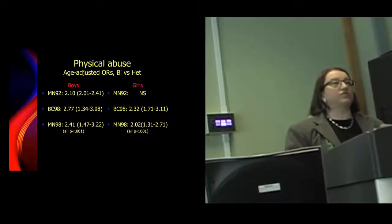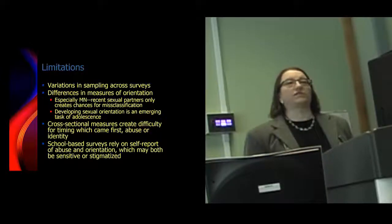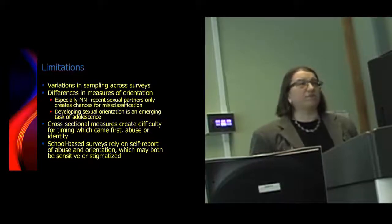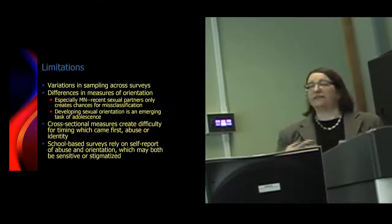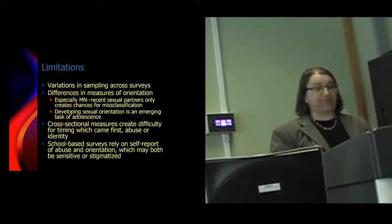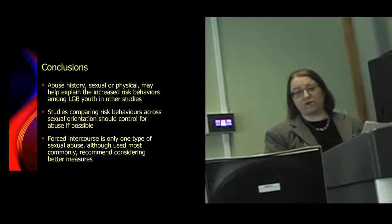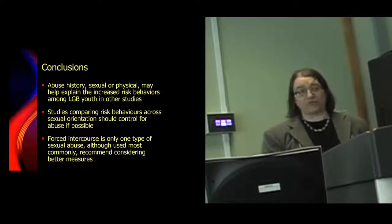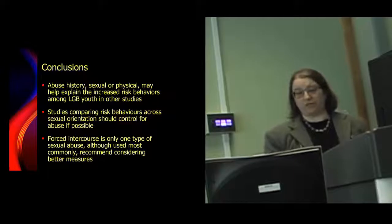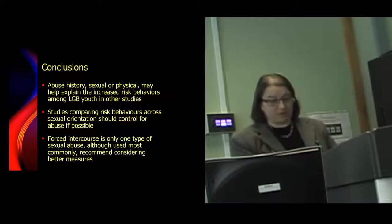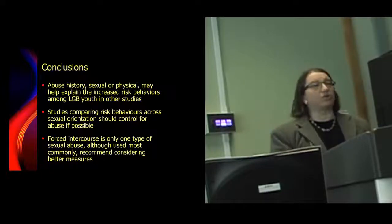The odds-adjusted ratios are also quite high. Regarding limitations: sampling differences across surveys is an important issue, and there are differences in measuring orientation across sites. These are cross-sectional surveys, so we can't determine timing, and they rely on self-report, which may be sensitive or stigmatized. In conclusion, LGB youth are at higher risk, and abuse history — sexual or physical — can help explain the increased risk behaviors we see. When comparing risk behaviors across sexual orientation, you should control for abuse if possible. Forced intercourse is only one type of sexual abuse and, though most commonly used in surveys, we recommend considering other measures.